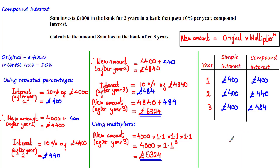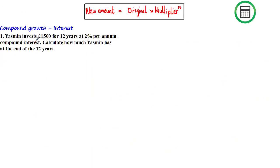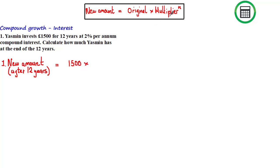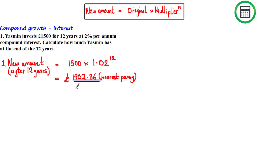We'll now use what we've learned to solve typical compound growth and decay questions. Yasmin invests £1,500 for 12 years at 2% per annum compound interest — calculate how much she has at the end. Using the formula: new amount = £1,500 × 1.02^12. Working this out gives £1,902.36. When dealing with money, always round decimal values to the nearest penny — two decimal places.